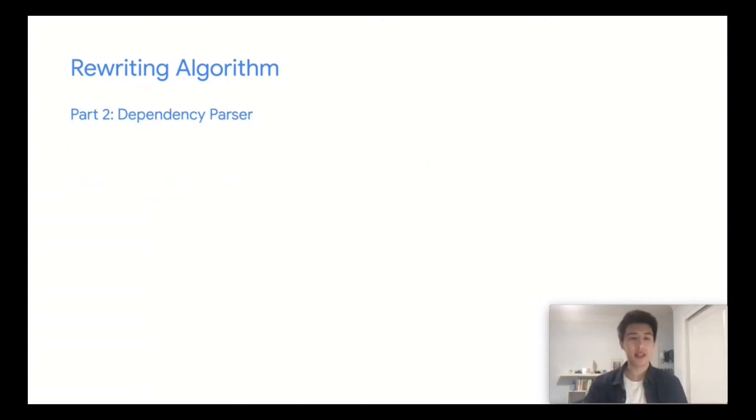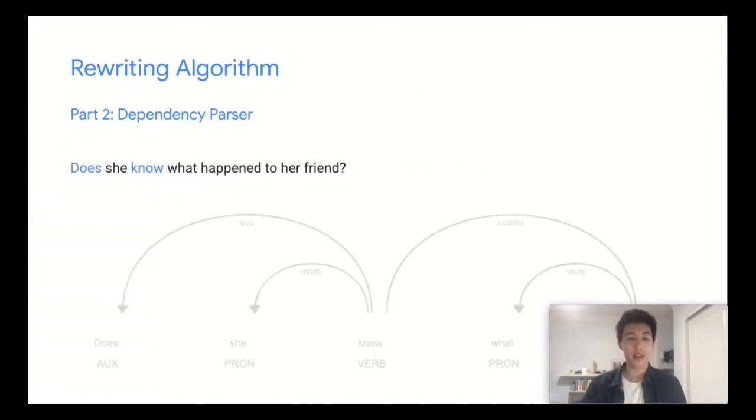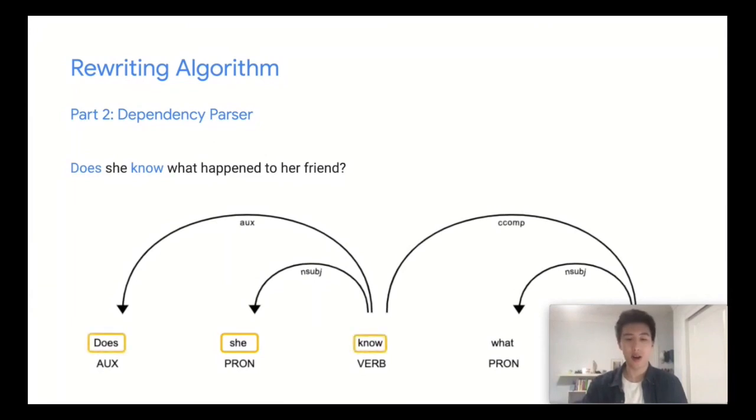The next step is to use a dependency parser to identify and rewrite verbs. In the same sentence, the verb is does know. We can find this using a dependency parse tree, where we find that the subject is she, and the words corresponding to she are does and know. We can rewrite this to be do know. The tricky part is if there are other verbs corresponding to non-gendered subjects, we want to keep these verbs the same.